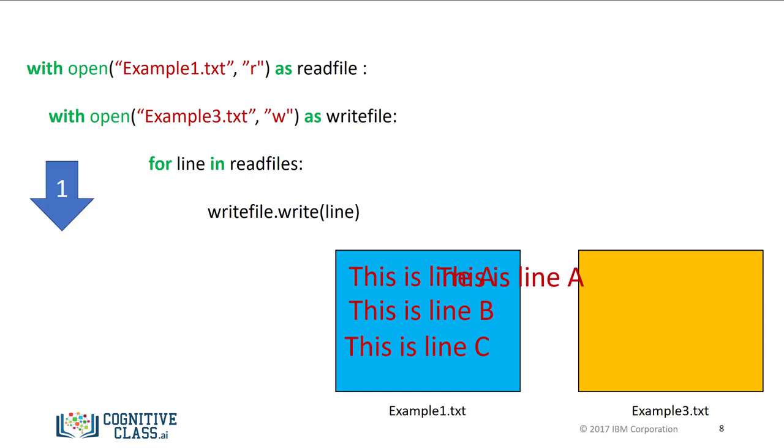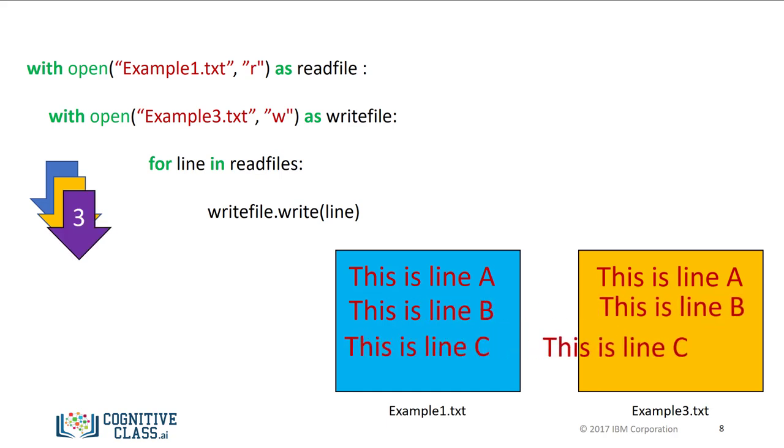The first iteration copies the first line. The second iteration copies the second line, till the end of the file is reached. Then both files are closed. Check out the labs for more examples.